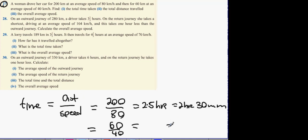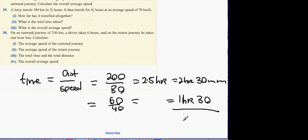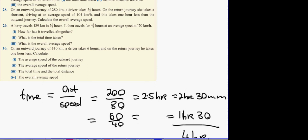And then what it's going to ask for next is find the total time taken. One and a half hours plus two and a half hours gives you 4 hours.